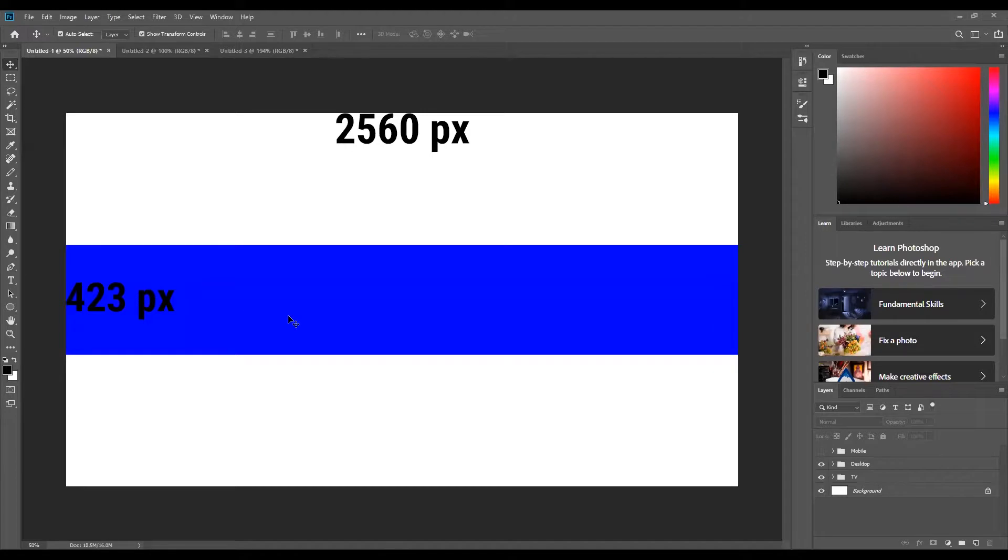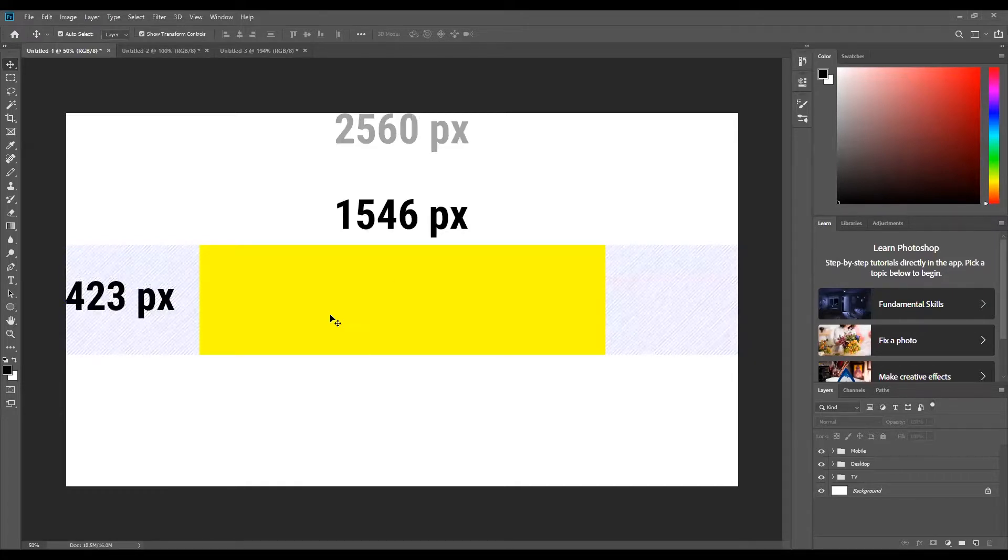When you put an image there, if you're going to put any text or logos, you're probably going to want to put that here. Then it crops even more for mobile. You'll see this yellow section is what displays for mobile when someone visits their channel on the YouTube app. You still have the 423 pixels high, but you're only about 1500 pixels wide. So this is like your main safe area.